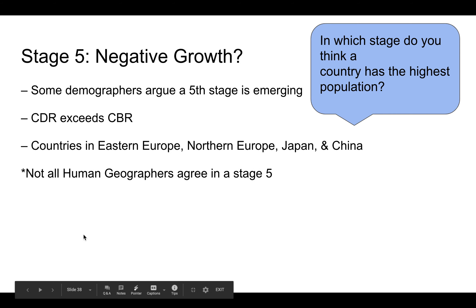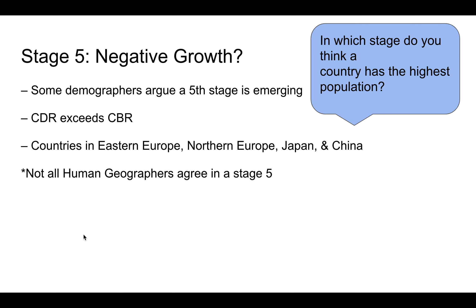Stage 5 is not agreed upon by all human geographers, but it is when you have a negative NIR — more deaths than births. Countries that are possible Stage 5 countries are very advanced developmentally and very homogenous culturally, like Japan, China, and northern European countries like Denmark, Sweden, and Norway.